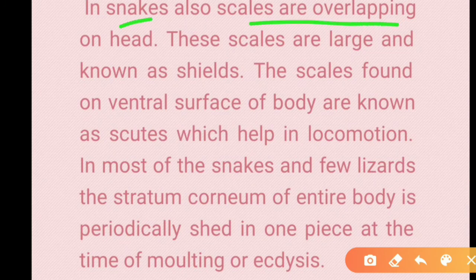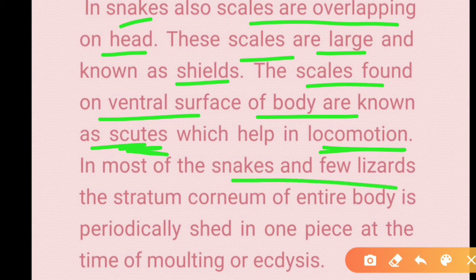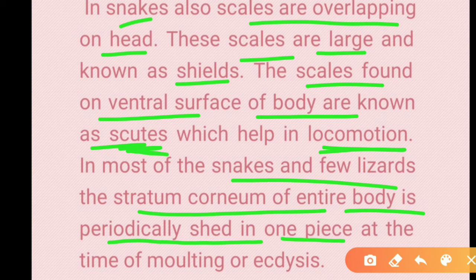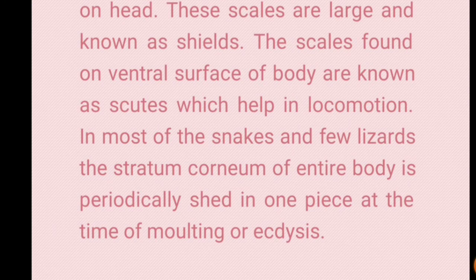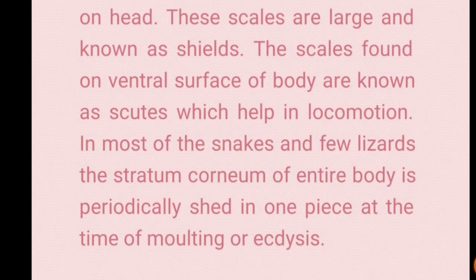In snakes, scales on the head are large and called shields. Scales on the ventral surface are called scutes and help with locomotion. In most snakes and some lizards, the entire stratum corneum is periodically shed in one piece during molting. In crocodiles and turtles, large thick rectangular scutes do not overlap but are attached to each other and are supported by dermal bones. Scutes of crocodiles are shed in pieces at regular intervals.